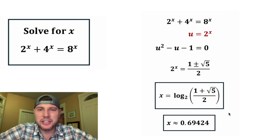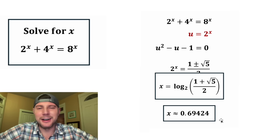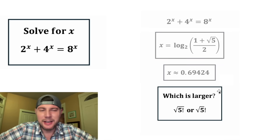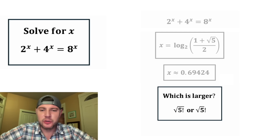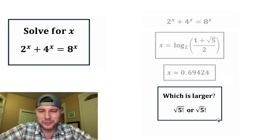Let's put a box around it. And if you want a decimal approximation, x is approximately 0.69424. How exciting! And here's the next question: which is larger, the square root of the quantity 5 factorial, or the quantity square root of 5, factorial? This looks like a fun one!